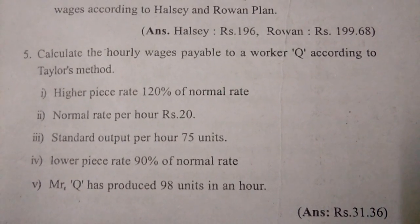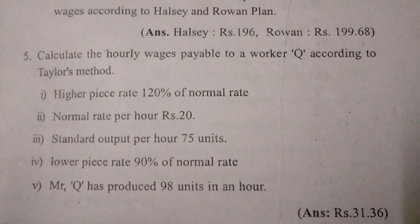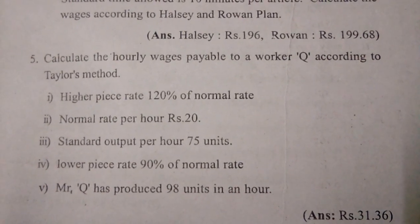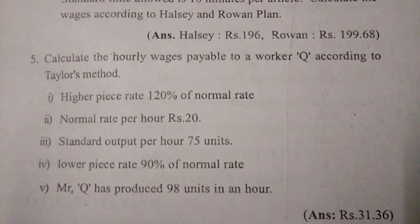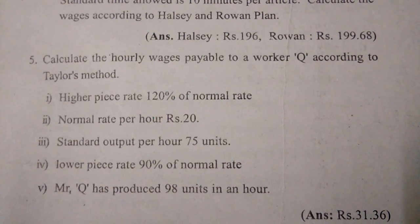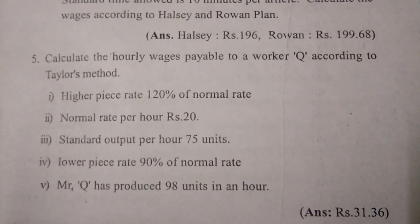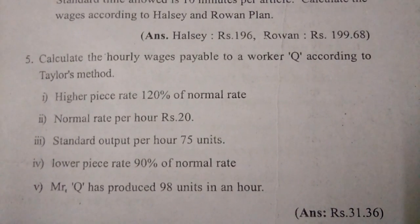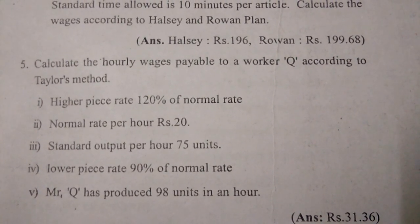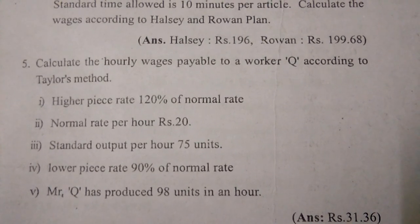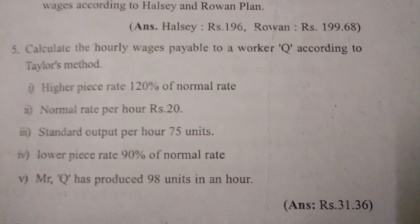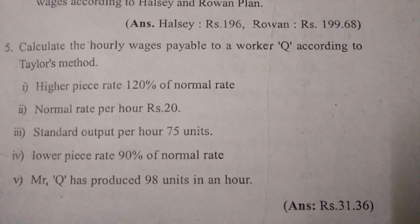Fifth one: calculate the hourly wages payable to a worker Q according to Taylor's differential piece rate method. Higher piece rate: 120% of normal rate, normal rate per hour: 20 rupees, standard output per hour: 75 units, lower piece rate: 90% of normal rate. Mr. Q has produced 98 units in an hour — that equals 31 rupees 36 paisa.